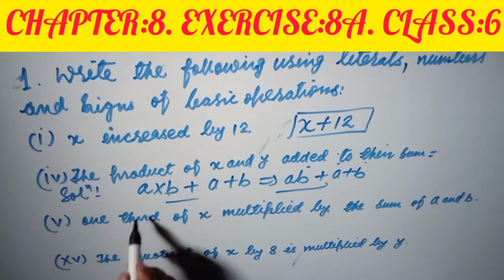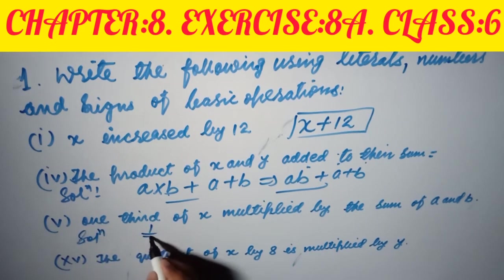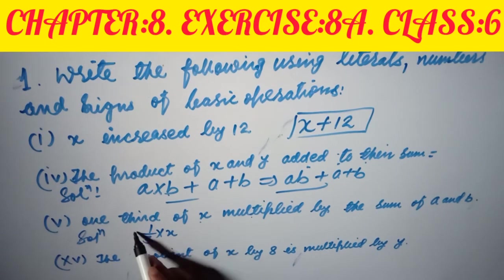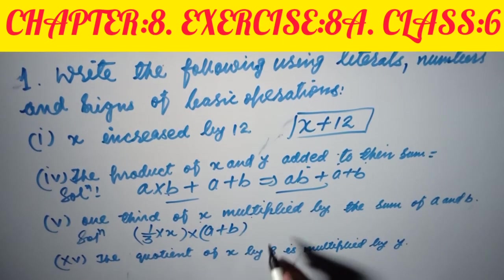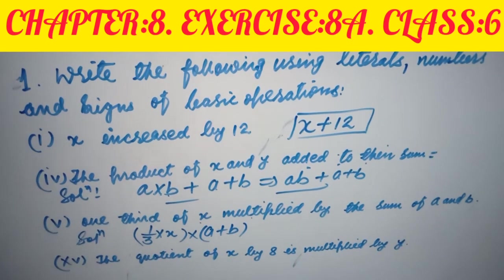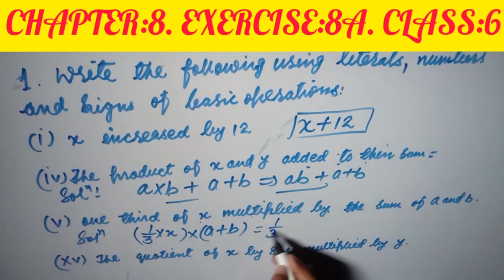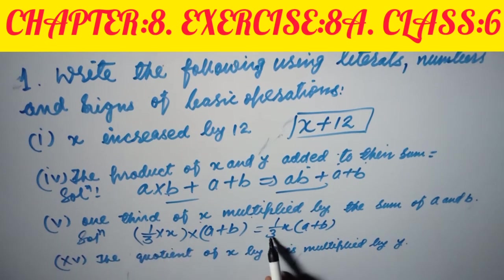Next: one-third of x multiplied by the sum of a and b. One-third of x means (1/3) times x. The sum of a and b means a plus b. So the answer is (1/3)x multiplied by (a plus b), written as (1/3)x(a + b).